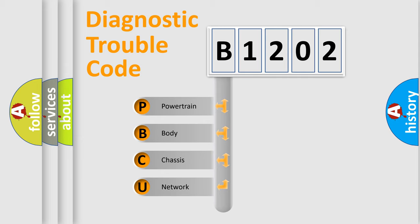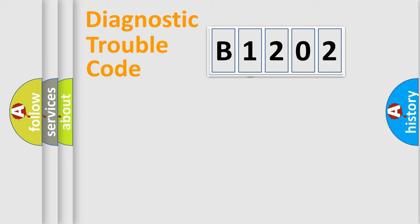We divide the electric system of automobile into four basic units: Powertrain, Body, Chassis, and Network. This distribution is defined in the first character code.